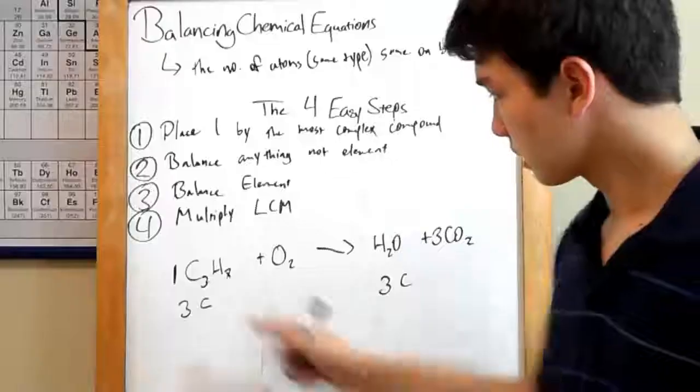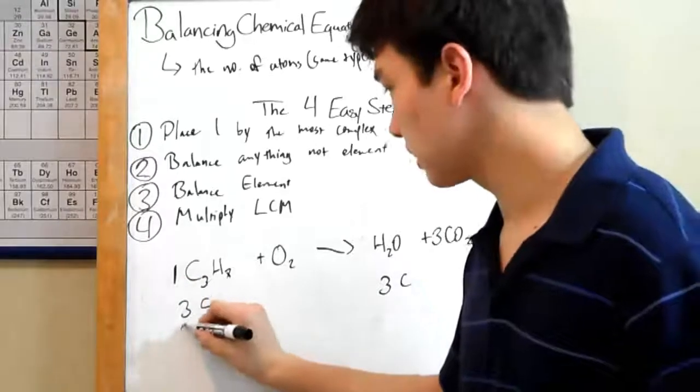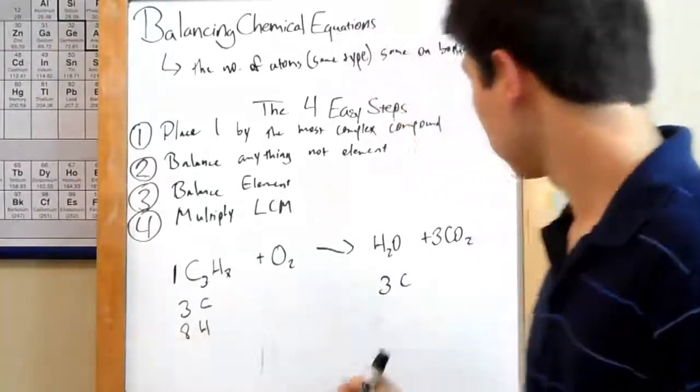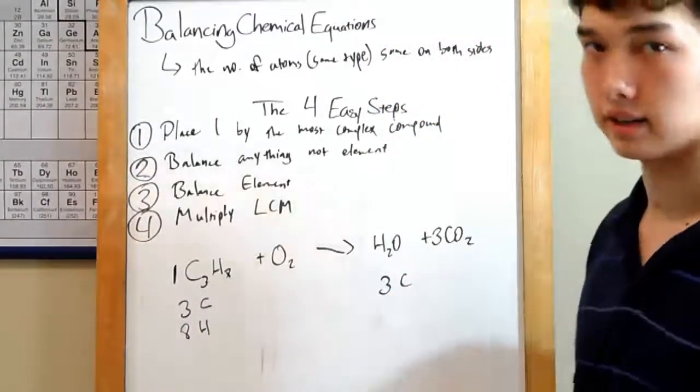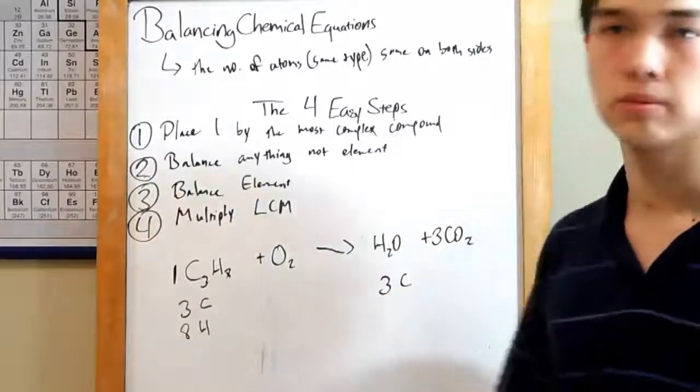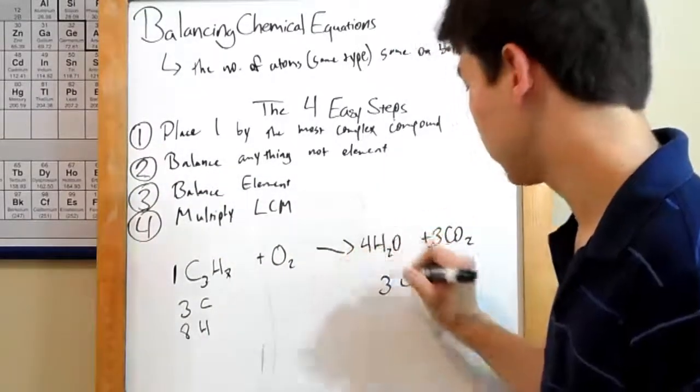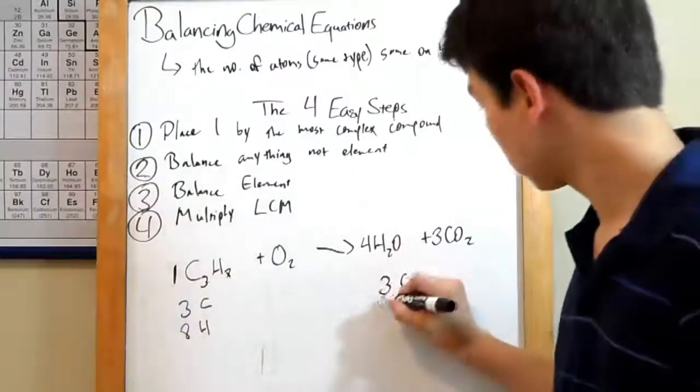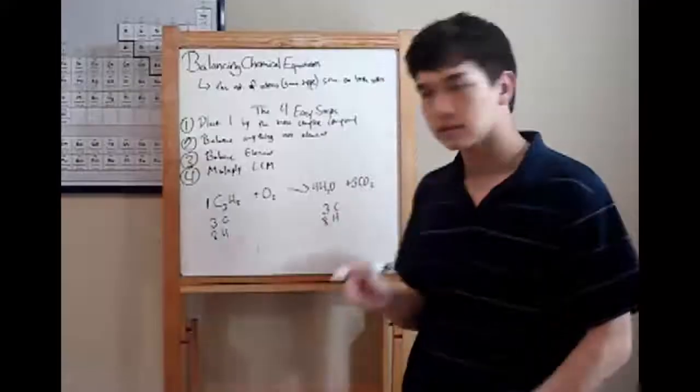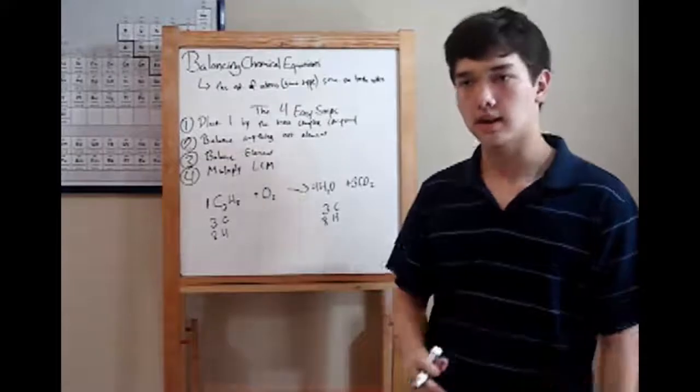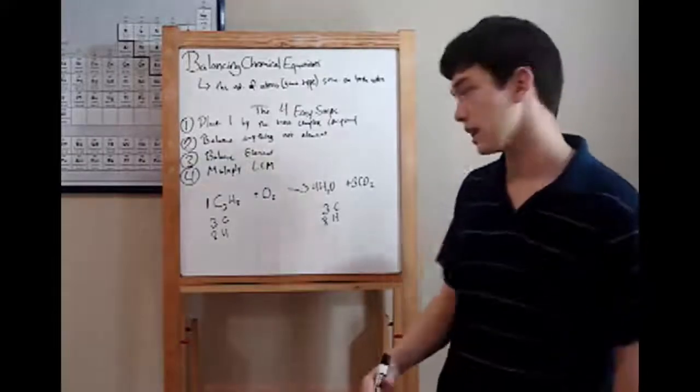Let's move on to hydrogen. Well, one times eight is eight. We have eight hydrogens on this side. Over here, the only hydrogens we can find are in water. We've only got two. Well, four times two is eight. So, we can put a four in front of water. We have eight hydrogens here, too. Hydrogens are balanced. Everything non-elemental is balanced. So, we move on to element.